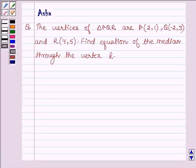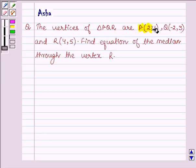Hello and welcome to the session. Let us solve the following question which says the vertices of triangle PQR are P(2,1), Q(-2,3), and R(4,5). Find the equation of the median through the vertex R.